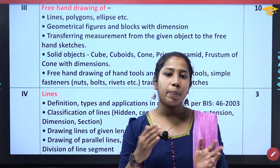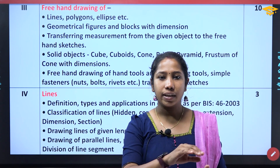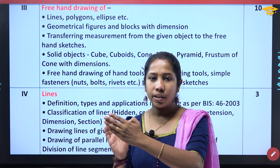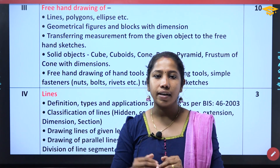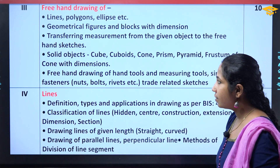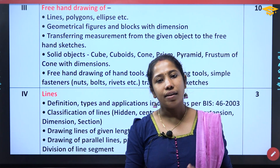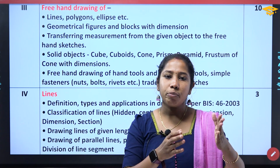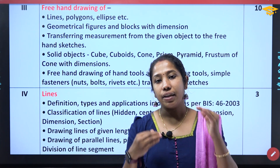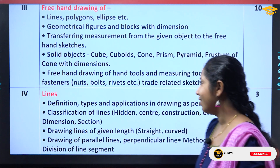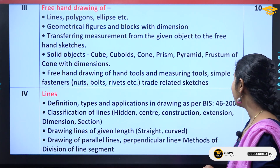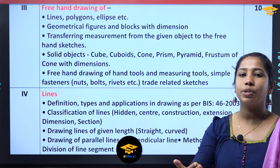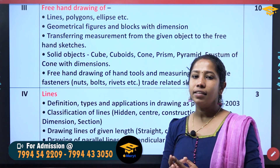For engineering drawing, we have 63 hours of engineering. You can learn the same at the ITI. There are two different platforms. Next is the 4th chapter on Lines — types and applications as per BIS 46. The classification of lines: hidden line, center line, construction line, extension line, dimension line, and section line. We study the types of lines as per BIS 46.